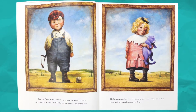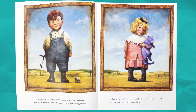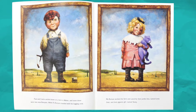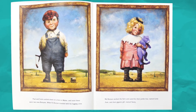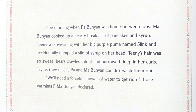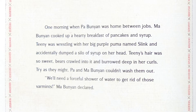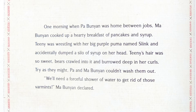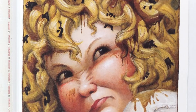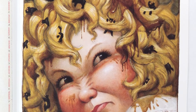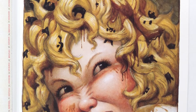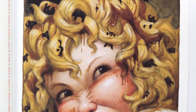Paul and Carrie settled down on a farm in Maine, and soon there were two new Bunyans. While Paul Bunyan traveled with his logging crew, Ma Bunyan worked on the farm and cared for their jumbo boy named Little Jean and their gigantic girl named Teenie. One morning when Paul was home between jobs, Ma Bunyan cooked up a hearty breakfast of pancakes and syrup. When Teenie was wrestling with her big purple cub named Slink, she accidentally dumped a silo of syrup on her head. Teenie's hair was so sweet, bears crawled in and burrowed deep into her curls. Try as they might, Ma and Paul Bunyan couldn't wash them out.